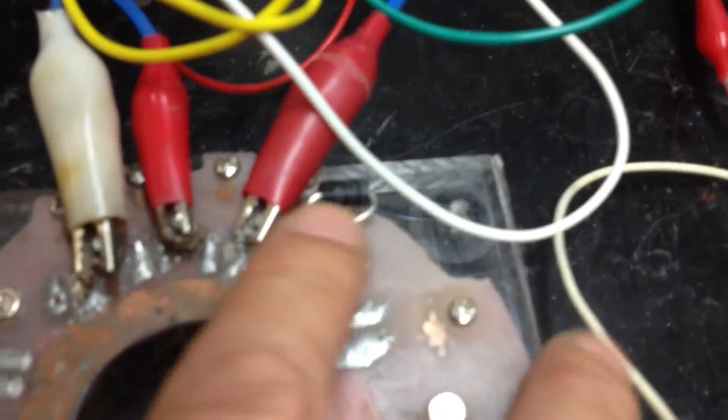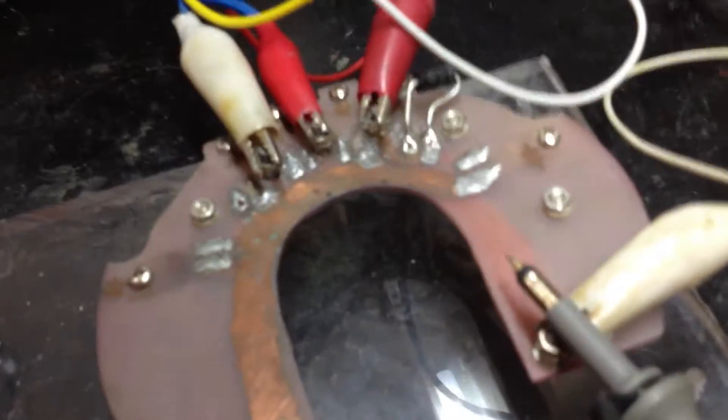With that diode there it's just a replacement diode because they're normal diodes there. I blew one of those up and didn't have one of those so I just replaced it with a normal one and these go to the cell.